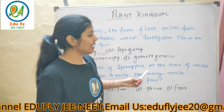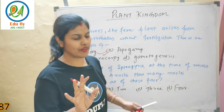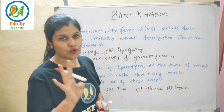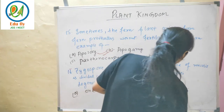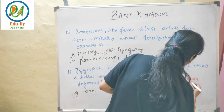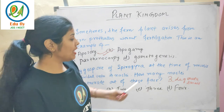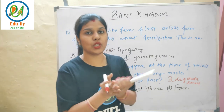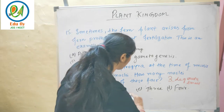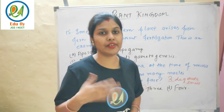The zygospore of Spirogyra at the time of meiosis is divided into four nuclei. Three of the four nuclei degenerate and become small. The fourth one becomes large and continues the cycle. So the option will be option C — three nuclei degenerate.